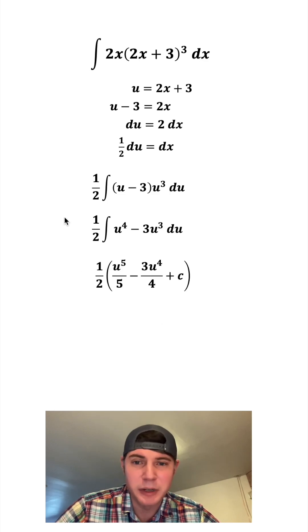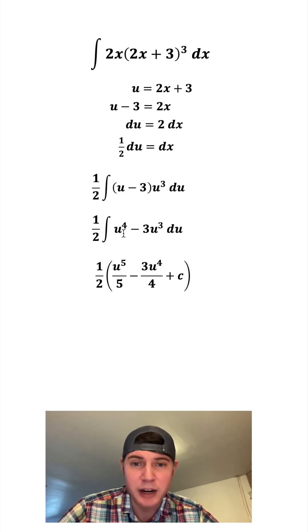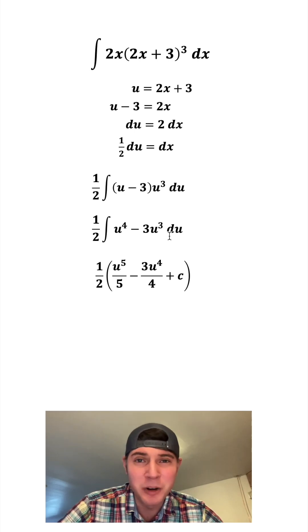Now let's take the integral. We can copy down the 1 half, and then this u to the 4 is going to become u to the 5th over 5. Then we're going to subtract. The multiplicative 3 is just brought down, and then the u cubed becomes u to the 4th over 4, and then you don't want to forget plus c.